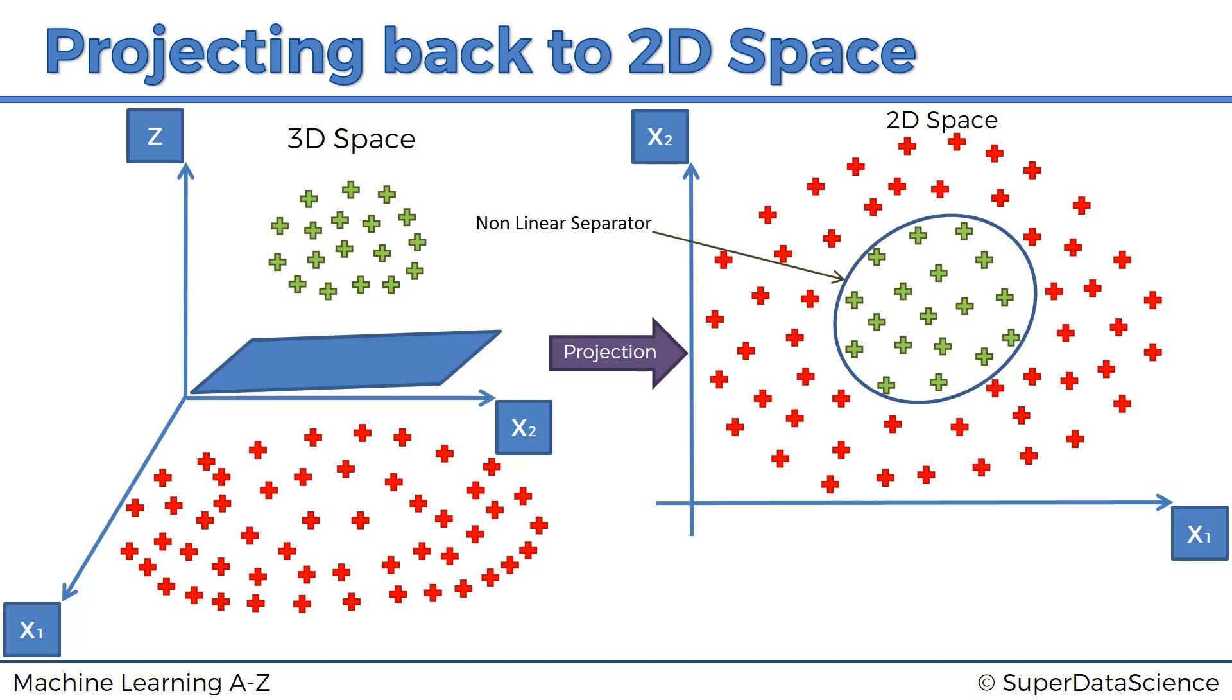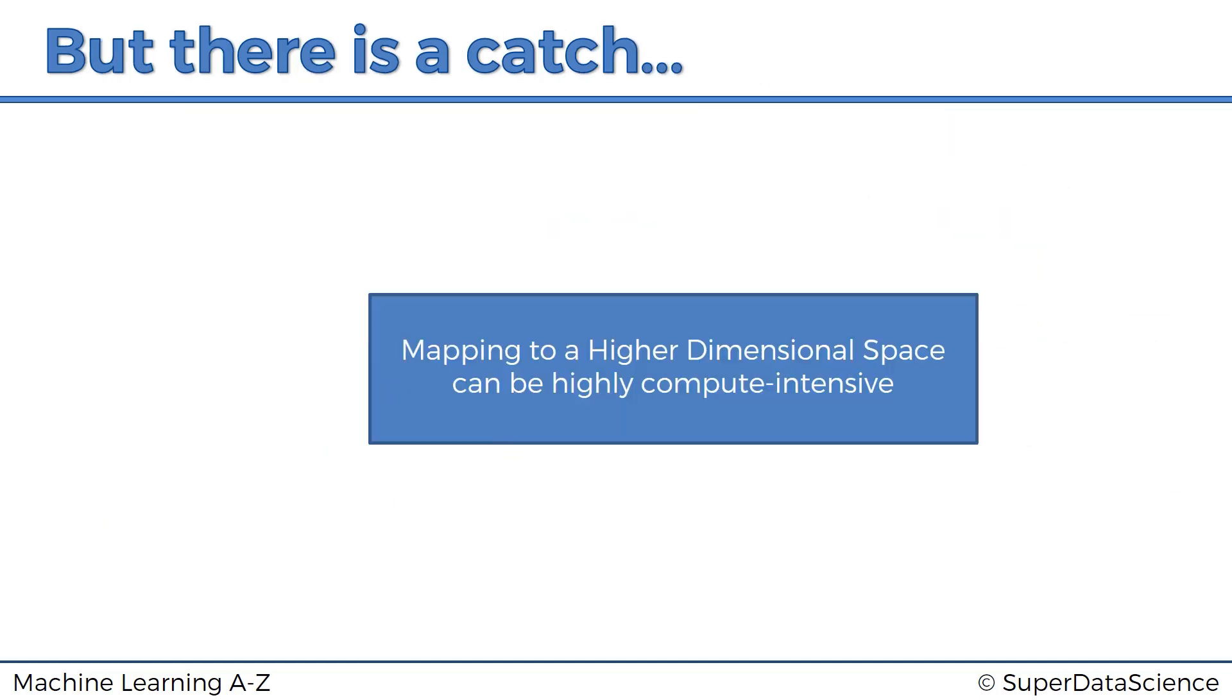But there's a problem. There's a problem with this algorithm. And the problem is that mapping to a higher dimensional space can be highly compute intensive. So it might require a lot of computation, a lot of processing power. And you know, the larger your data set, the more of a problem this can cause.